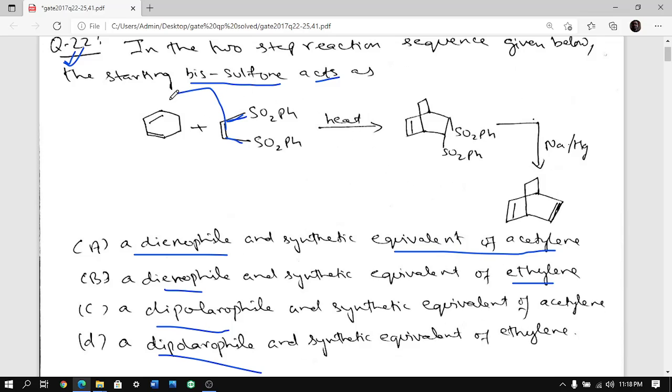One thing is very clear: it will undergo Diels-Alder kind of reaction. So if it undergoes Diels-Alder reaction, this will act as a dienophile. So very clearly it will be either option A or option B. These both are common names - acetylene is basically ethyne, ethylene is basically ethene. So we have to look into it.